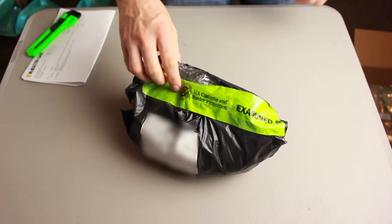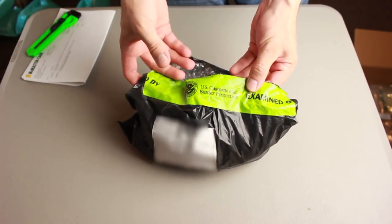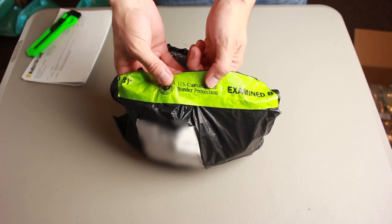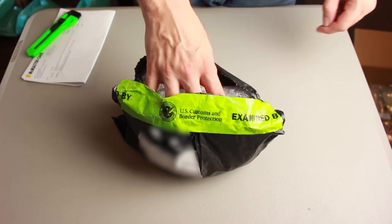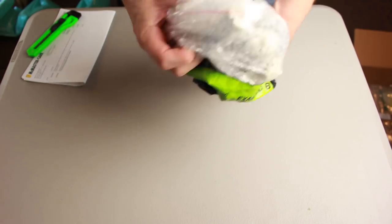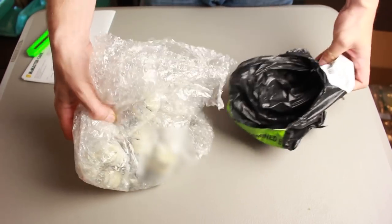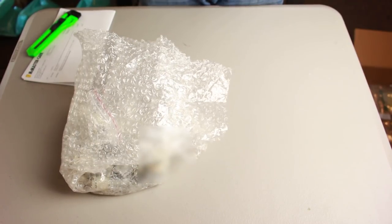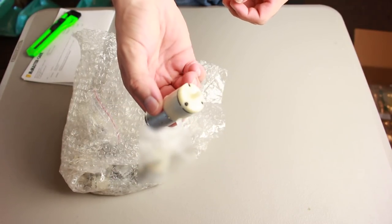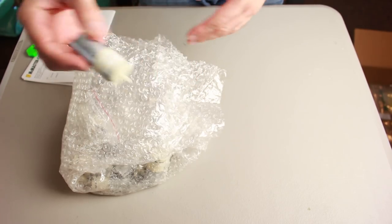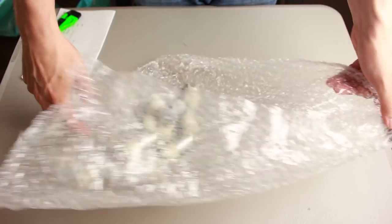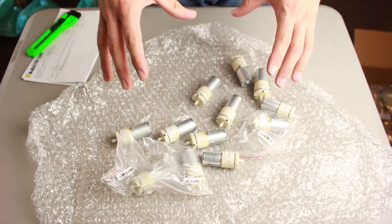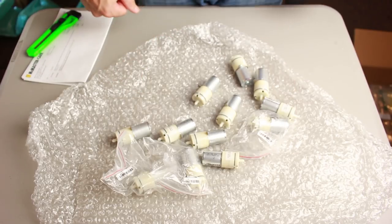This is number two. This is from China. You can see that it's already been examined by U.S. Customs and Border Protection, keeping us safe. So we've got these little motor pumps, little actuator pumps. There should be about 12 or 13 of them. It looks like there are 12 of them. I need to get to testing these to make sure that they work.